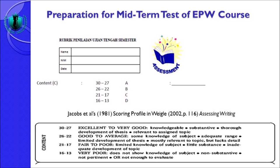Untuk nilai C fair to poor: limited knowledge of subject, little substance, inadequate development of topic — topik yang dikembangkan kurang. Yang terakhir, very poor — does not show knowledge of subject, tidak menunjukkan pengetahuan tentang subject yang ditulis, non-substantive artinya bahasa biasanya ngawur, non-pertinent atau tidak jelas, serta not enough to evaluate — tidak cukup untuk dievaluasi. Misalnya disuruh paragraf tapi ditulisnya cuma satu kalimat, ini otomatis dapat nilai D.